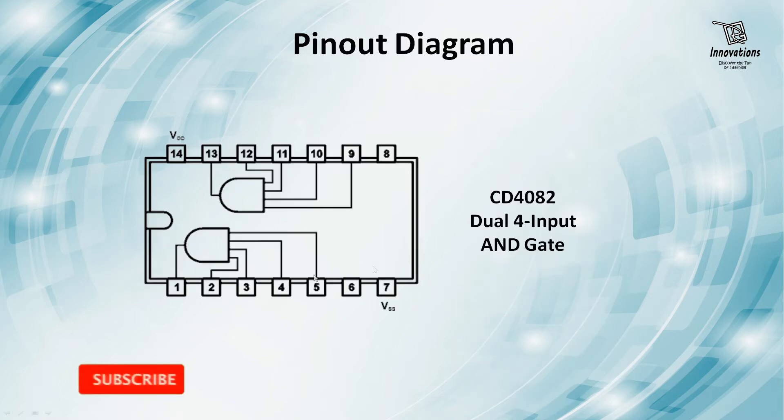Now let us have a look at the pinout of the CD4082 IC. This is a CD4082 IC schematic where you can see there are two AND gates. AND gate 1 has input pins 2, 3, 4, 5 and output pin 1. Pin number 6 is no connection. Pin number 7 will be connected to negative or ground. Pin number 8 is no connection. Pin numbers 9, 10, 11, 12 are inputs for the second AND gate and pin number 13 is the output. Pin number 14 will be connected to the positive power supply.